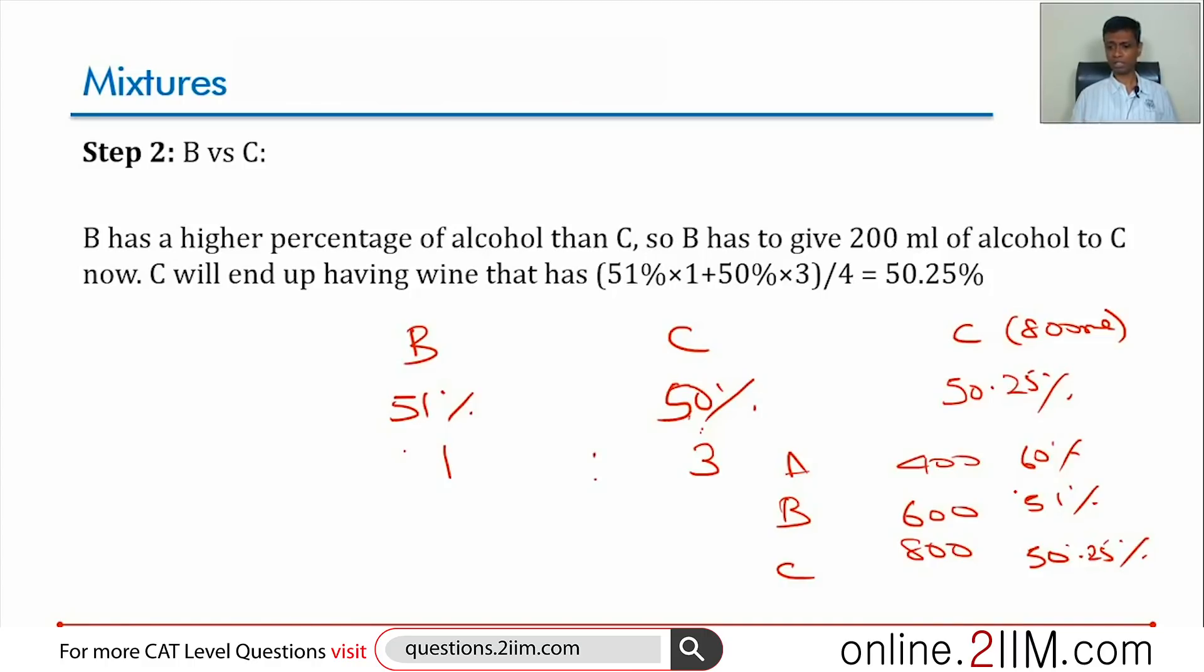When A and C meet, A will have more than C, so A will give to C. Then A and B play. A will always still have a higher percentage than B, then A will give to B. So A will go to 0. Think about it. A has 60%, he keeps on giving, and then new mixtures get